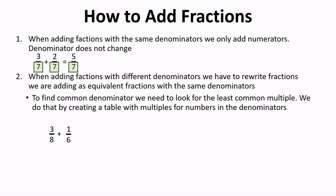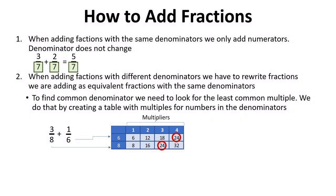For example, to add 3 eighths and 1 sixths, we have to rewrite those fractions as equivalent fractions with the same denominator. The least common multiple for 6 and 8 is 24.